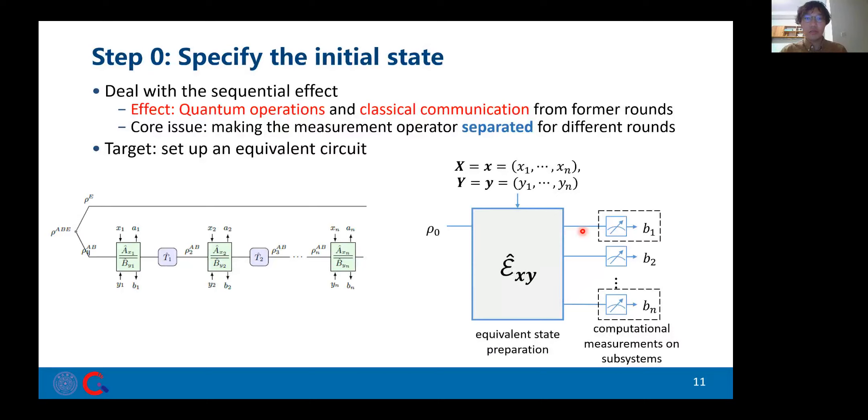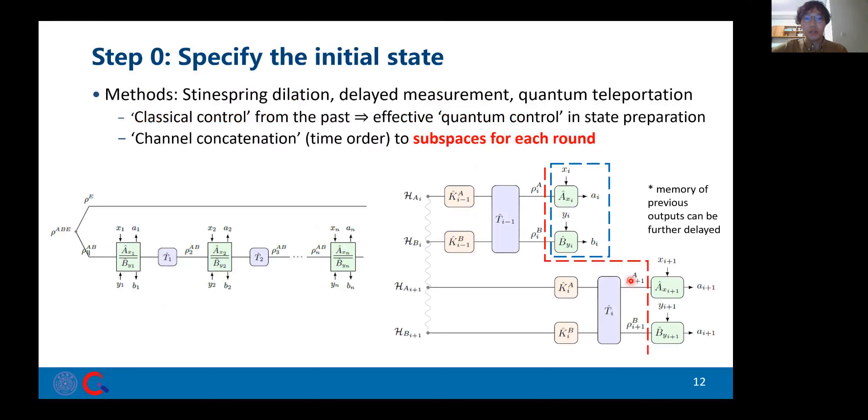Usually, we model the sequential setting as channel concatenation like the left figure. Well, to apply the complementarity approach, we need to transform it to a circuit on the right, where conditioned on the random inputs, an equivalent state preparation operates on the state such that the measurements become separable operators on subsystems for each round. The trick here is to use Stinespring dilation, delayed measurements, and quantum teleportation. We can prove that for any sequential setting on the left, we can find an equivalent picture to describe the process as the circuit on the right. Therefore, we can virtually replace key generation measurements with their complementary basis and proceed to the complementarity analysis.